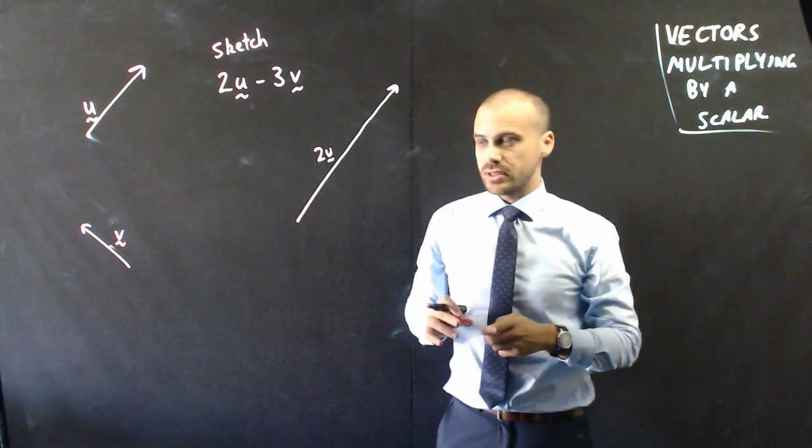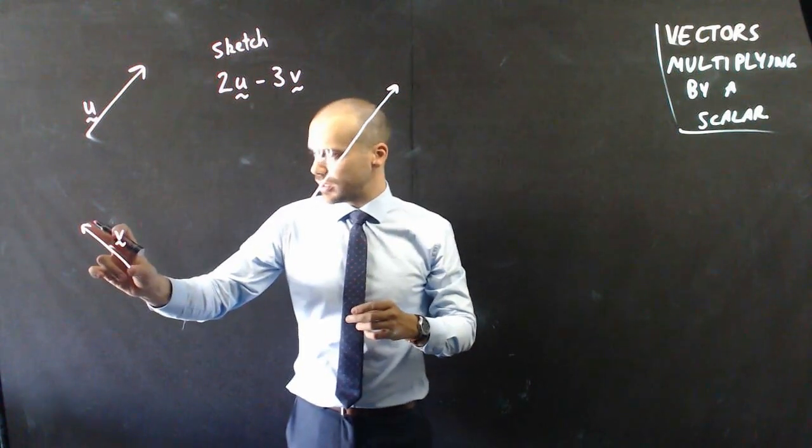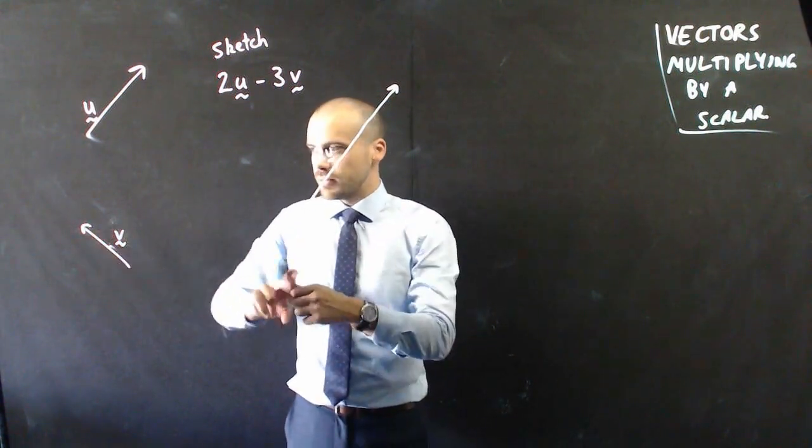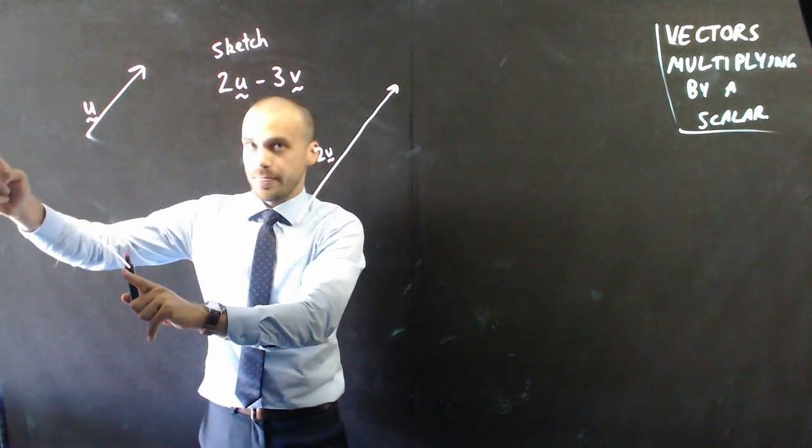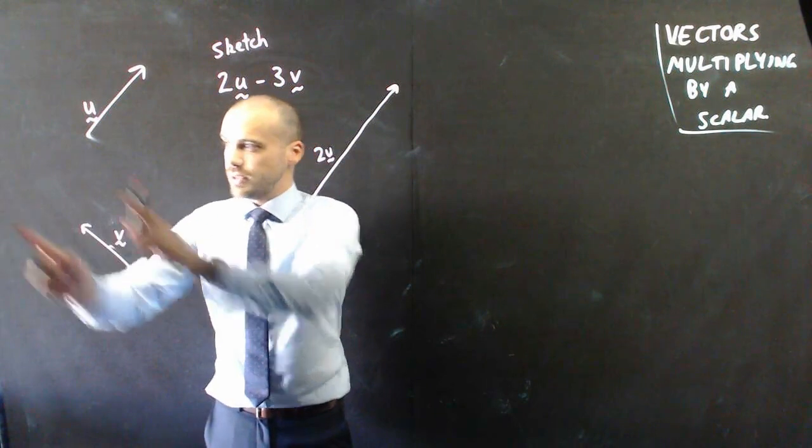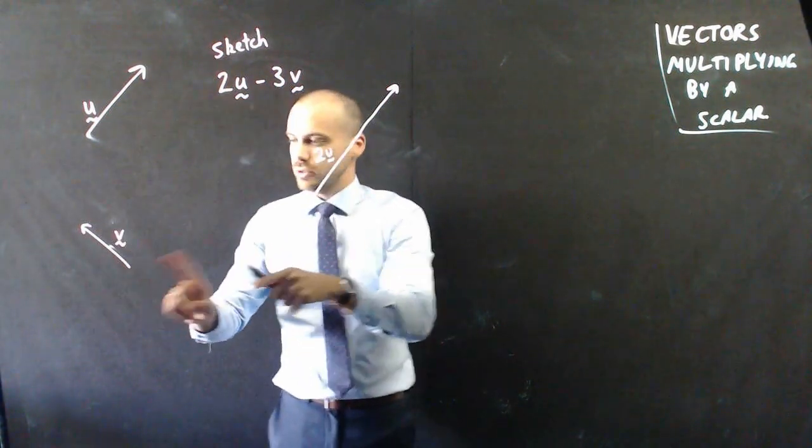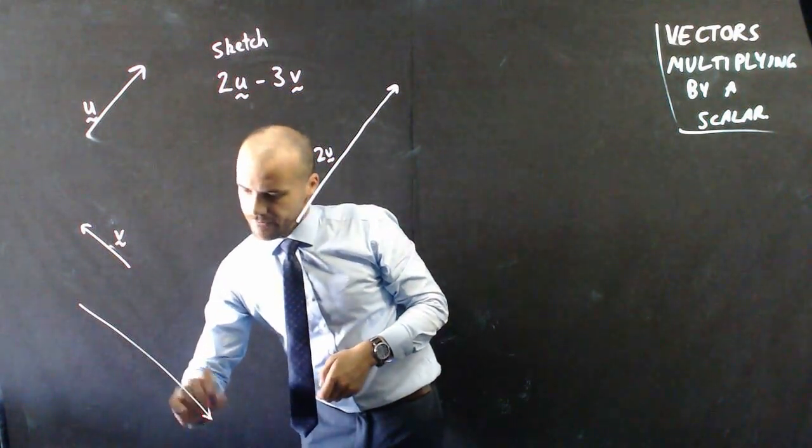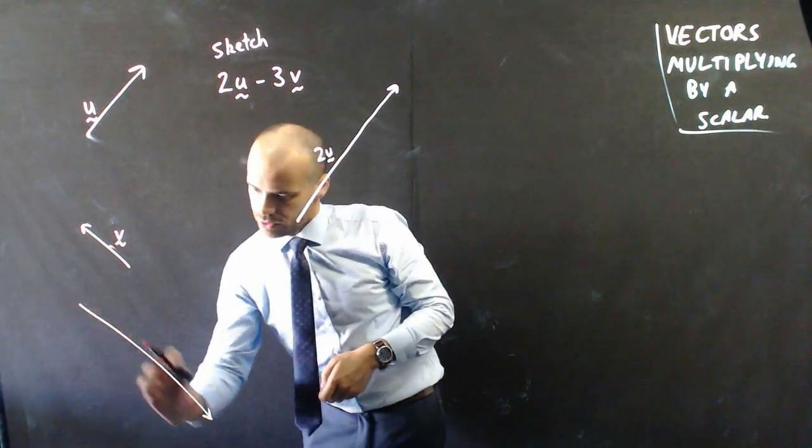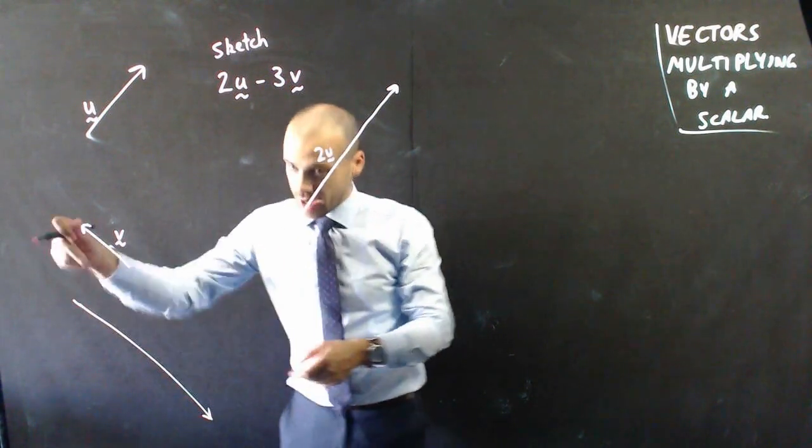Negative 3v. I might just think about that for a minute. Negative 3v. This is v. Multiplying it by 3 is going to make it 3 times as big. Making it negative 3v is going to turn it around. So, it's going to look, I'll just draw it over here. It's going to look like that. 1, 2, 3, that's about long enough. And going in the other direction.